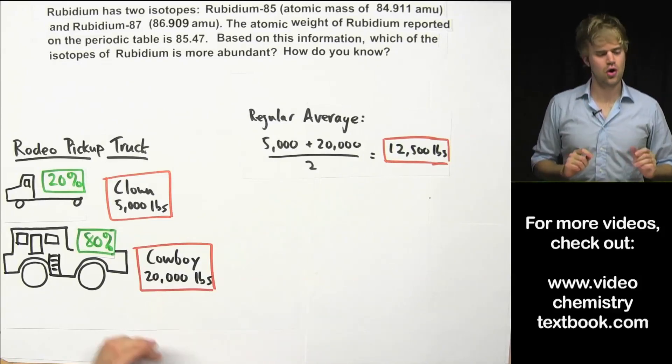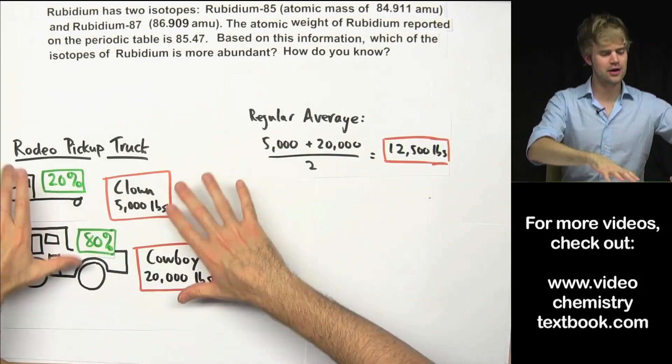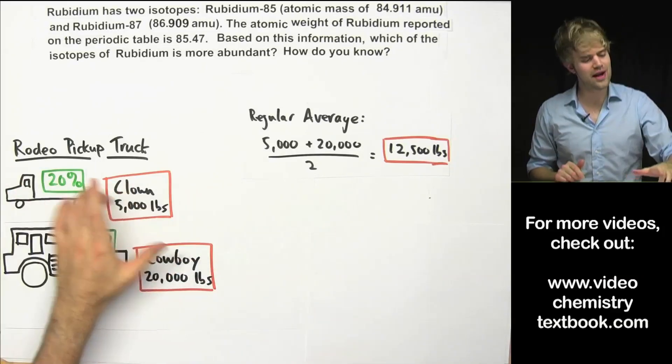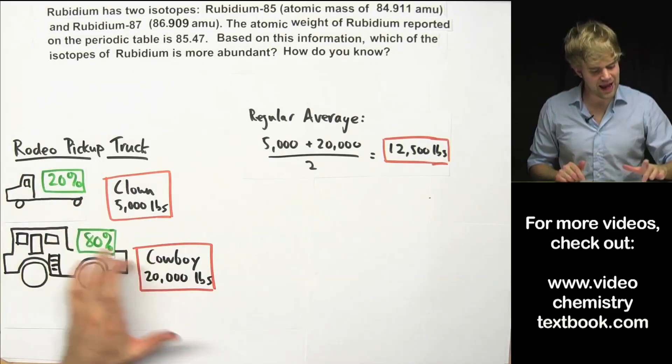80% of the rodeo pickups on the road were the rodeo cowboy because people thought it made them look tough. So in that case, what is the average weight of all of these pickup trucks? Because they're only 20% of the clown and 80% of the cowboy.